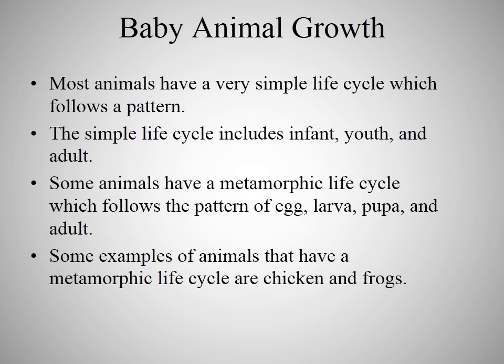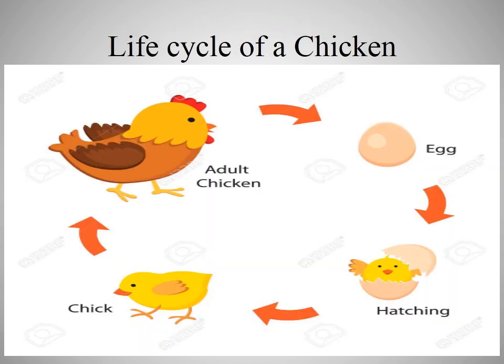Some examples of animals that have a metamorphic life cycle are chicken and frogs. Here is the life cycle of a chicken. As you can see in the figure, there is an egg. When the chicken sits on the eggs, the process is known as hatching. The egg breaks open and a chick comes out. This chick grows into an adult chicken, and again the adult chicken lays eggs. This is called the life cycle of a chicken.